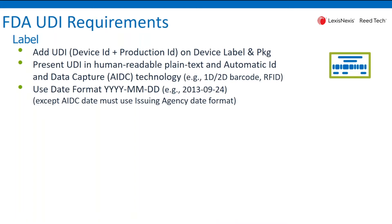Basically, the information that needs to be included on the label has to be expressed — the UDI information has to be expressed in human-readable plain text and also in something called automatic ID data capture, AIDC, so that is usually implemented as a one-dimensional or two-dimensional barcode.